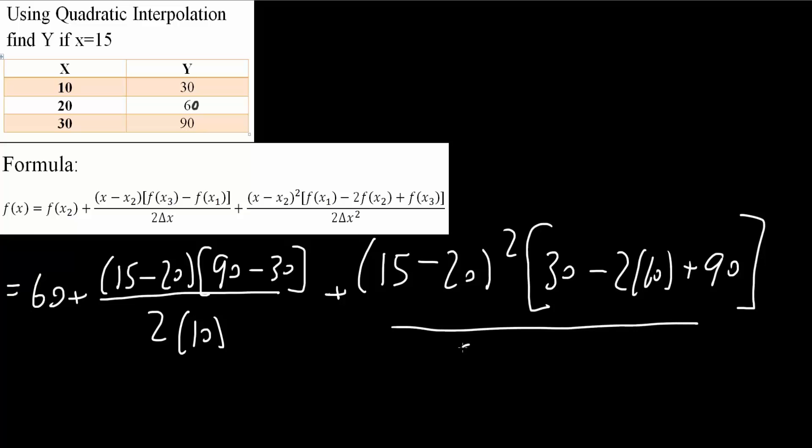divided by 2 times delta x squared. 30 minus 20 is 10, 10 squared. So 10 here squared.